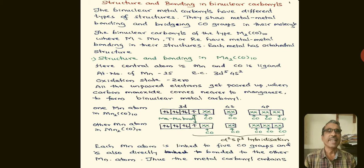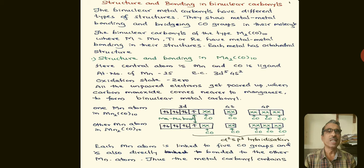The first binuclear carbonyl is dimanganese decacarbonyl. In dimanganese decacarbonyl, the central atom is manganese and carbon monoxide is the ligand. The atomic number of manganese is 25, with electronic configuration 3d⁵4s². The oxidation state of manganese is 0. All unpaired electrons get paired up when carbon monoxide comes nearer to manganese. In this binuclear metal carbonyl, manganese has 7 electrons total.